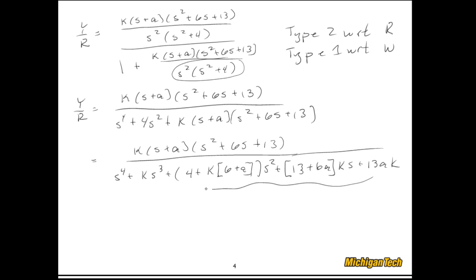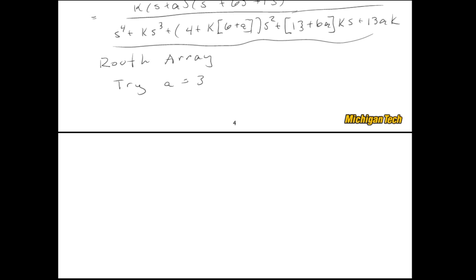Rather than solving a full Routh array in two variables, let's try A = 3 to simplify to one variable K. With A = 3, the characteristic equation becomes: s⁴ + Ks³ + (9K + 4)s² + 31Ks + 39K.